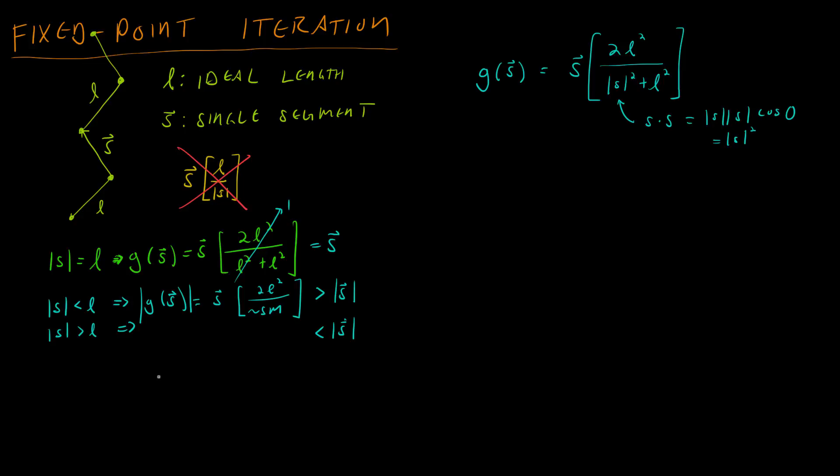Let me phrase that again. If we have a vector that's the size we want it to be, equal to the ideal length, then everything is fine. This function doesn't change anything. If it's slightly less long than the ideal length, then this function will increase it to approach the ideal length. And if it's slightly longer, then it will decrease it to approach the ideal length. So I'm going to try and draw that in a picture so we can get a little bit better understanding.